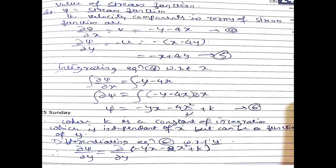Out of equations four and five, I will consider equation number four: ∂ψ/∂x = -y - 4x. Integrating with respect to x: ψ = -yx - 4x²/2 + k = -yx - 2x² + k, where k is the constant of integration. This is equation number six.